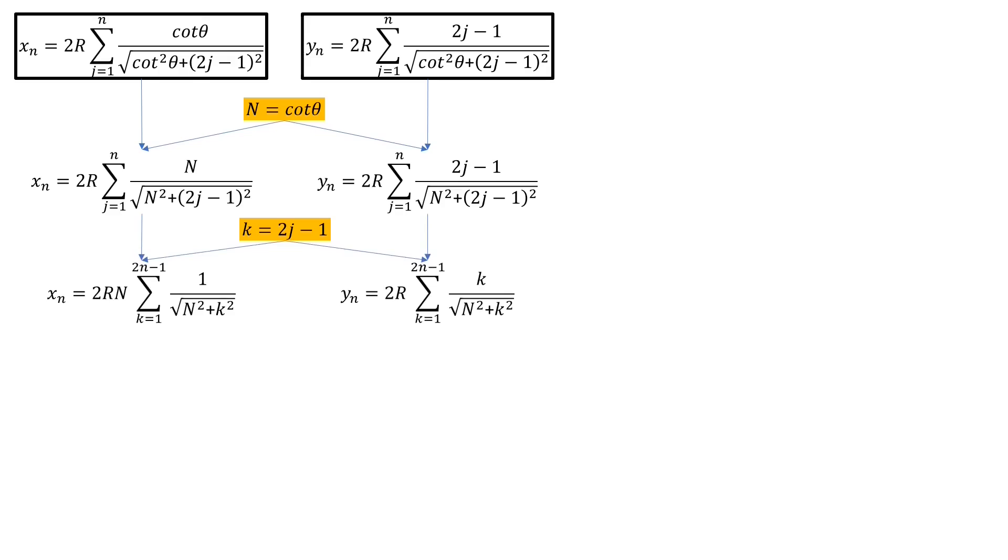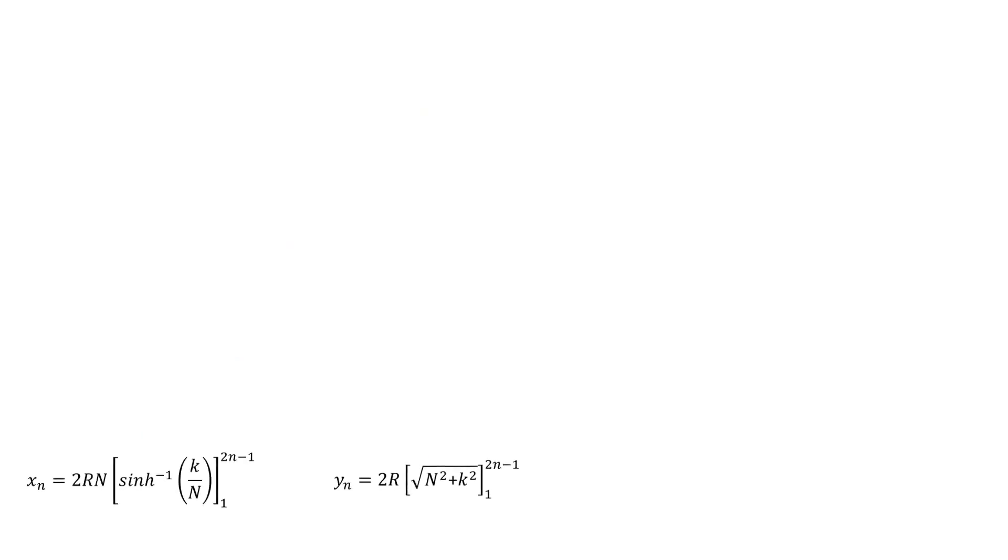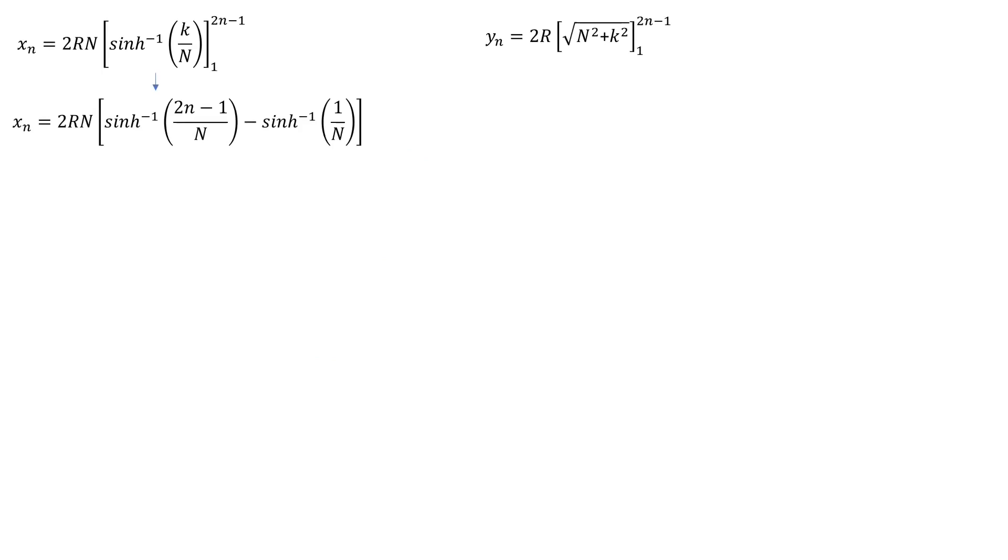And now we take the continuous limit and write our sums as definite integrals. For brevity, I'll gloss over the integrations, which has the following forms and is easily verified. We plug in the limits of integration into our antiderivative for x. The limit of cap N goes to infinity as the arcsinh of 1 over N tends to 0. So the second term vanishes in our large N, small angle limit.